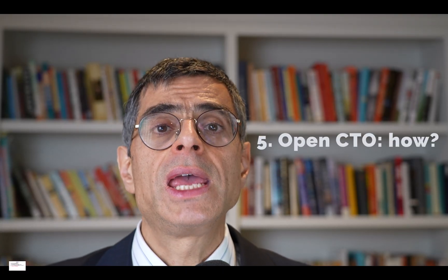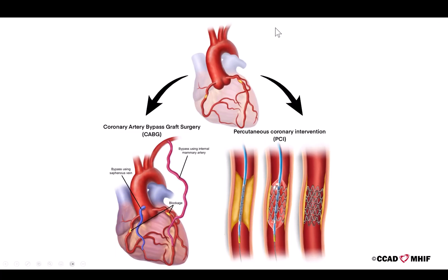Question number five: how can a CTO be opened? There are two ways to restore blood flow to a blocked artery. One is open heart surgery called coronary artery bypass graft surgery, or CABG. The surgeon takes a piece of vein from the leg and a piece of artery and uses these to divert blood flow around the area of the blockage — bypassing it, which is why it's called bypass. The other way is percutaneous coronary intervention, or PCI, done by advancing small wires, balloons, and stents through the area of the blockage to allow blood to flow through the area that used to be blocked.